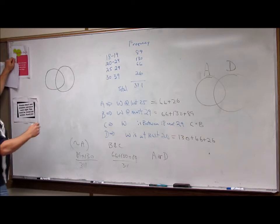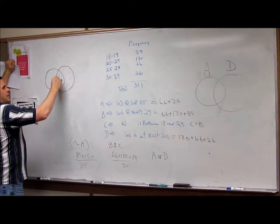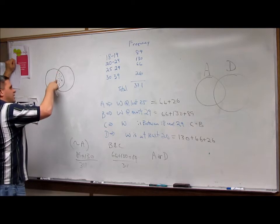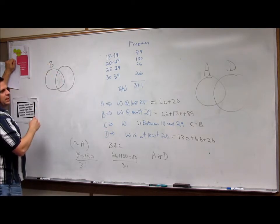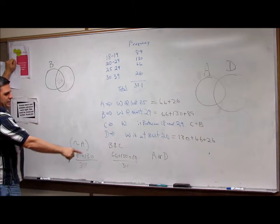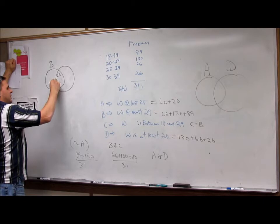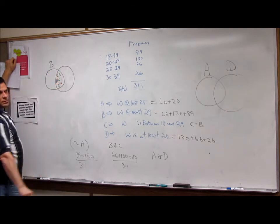So when we were talking about B and C, we were saying here's B and here's C. So when we're saying B or C, that would be everything in here. Or B and C, I'm sorry. B and C would be everything in here. Well, think of that. If this is B, and B is 66, 130, and 89.